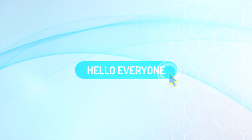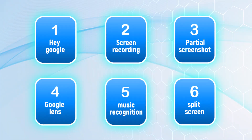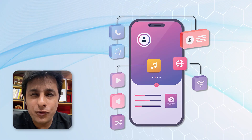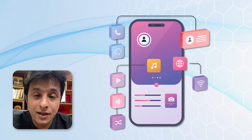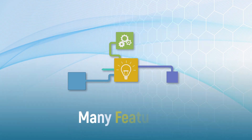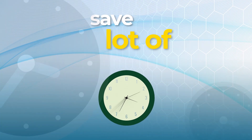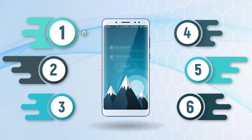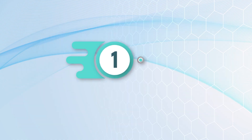Hello everyone. In this video we'll understand six different important features about mobile phones. Today mobile phones have plenty of features which are making our life easy. There are many features which can save a lot of time. In this video we'll understand these six different features which are going to help you save a lot of time and make you much smarter. Let's begin with the first one.